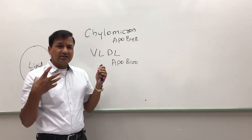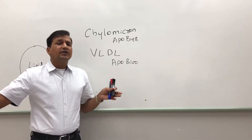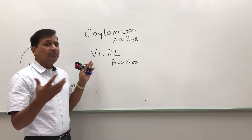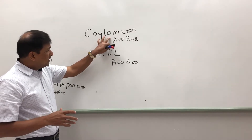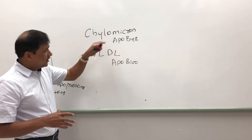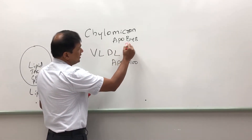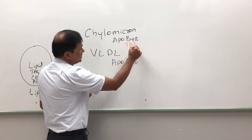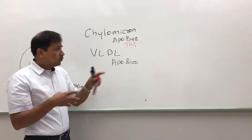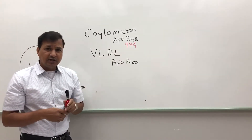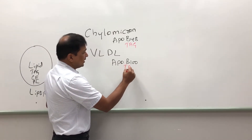VLDL is synthesized and secreted by the liver into the circulation, and its content is taken up by other tissues. The major content in chylomicron is triacylglycerol, coming from food. Similarly, the major content in VLDL is also triacylglycerol, which is synthesized in the liver.